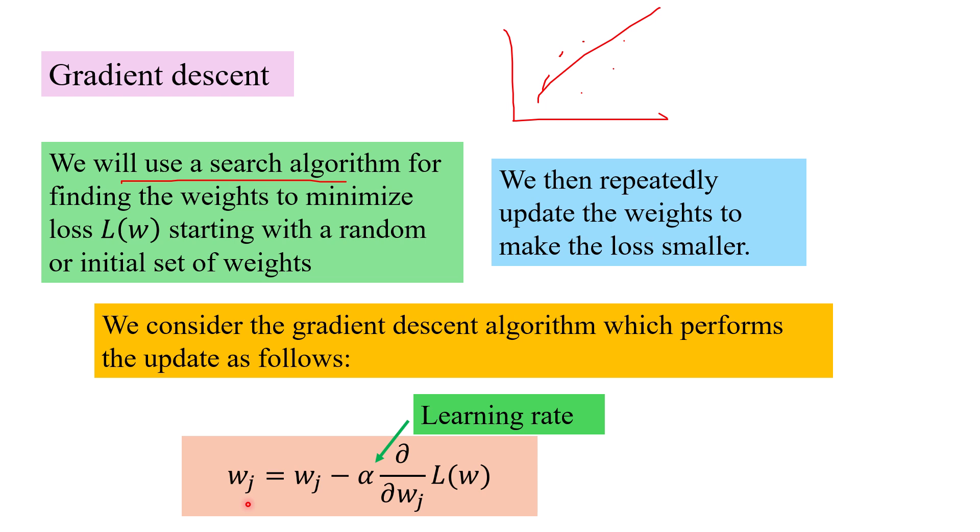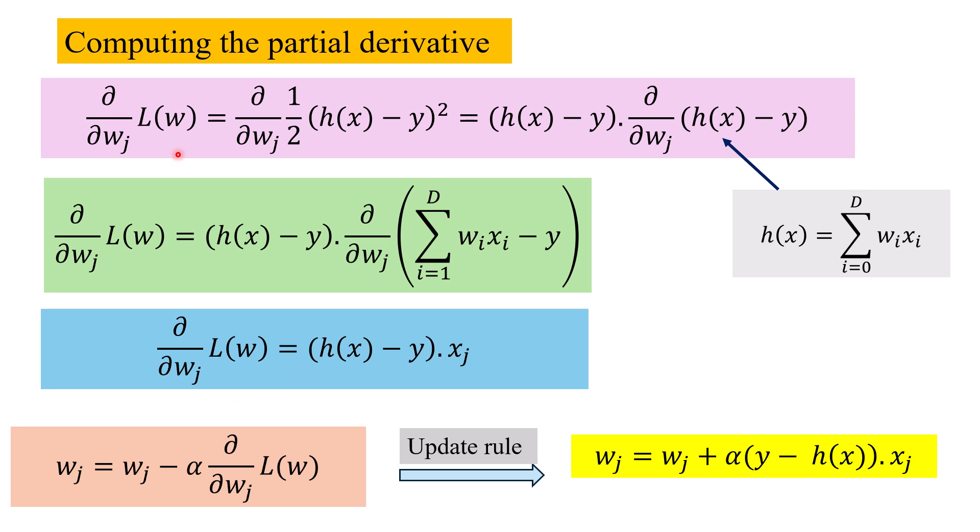A weight wj attached with the jth dimension of the x input is updated as follows. We have alpha which is the learning rate multiplied with the partial derivative of the loss with respect to wj. Now we compute the partial derivative. This ∂/∂wj L(w) we rewrite it. And we have introduced this half over here only for mathematical convenience because this half will cancel off this 2. When we take the derivative of x squared we get 2x into the differentiation of x. This 2 cancels off this half. Here we see that del by del wj of this value is nothing but (h(x) - y) into ∂/∂wj of (h(x) - y) and h(x) we recall is this.